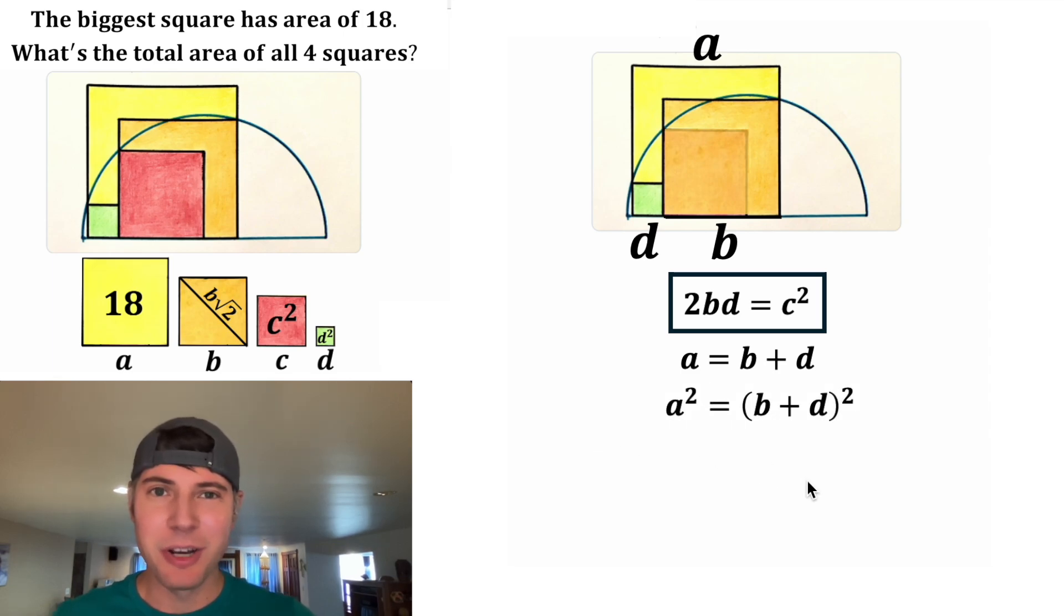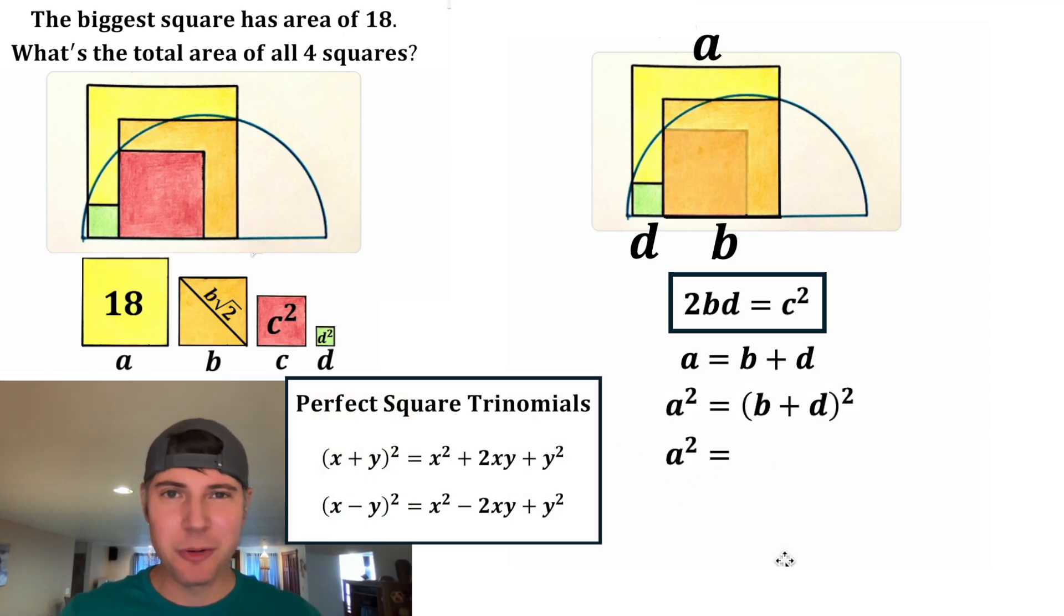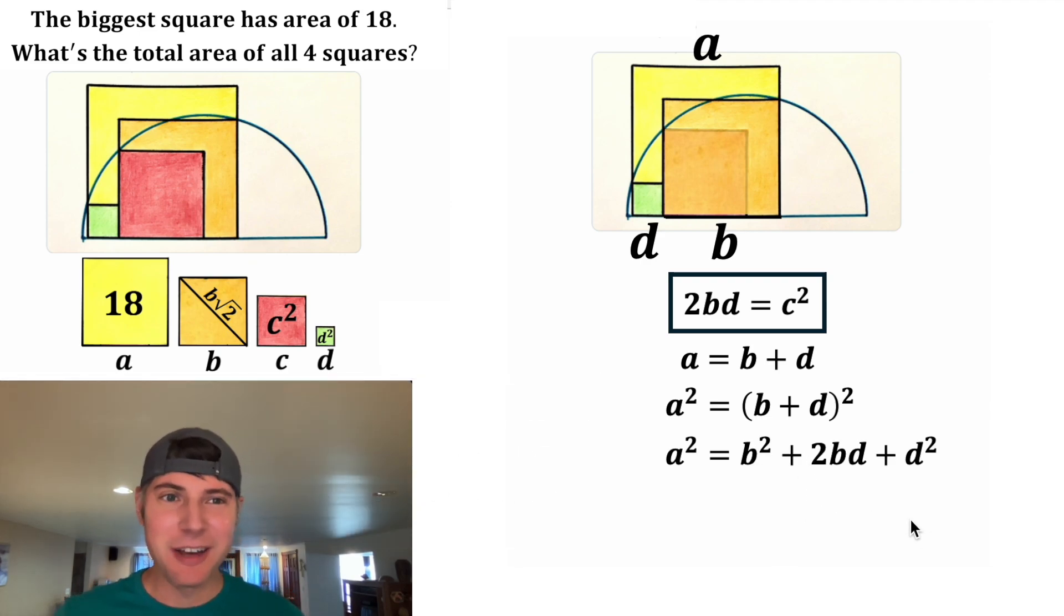But we can do that by squaring both sides of the equation. We can use the notes for a perfect square trinomial, and that'll break out into B squared plus 2BD plus D squared. Now, are you as excited as I am? We know that 2BD is equal to C squared. So in the place of this 2BD, we can plug in C squared. So now we have A squared is equal to B squared plus C squared plus D squared.